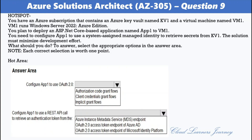Select the appropriate options in the answer area. To configure App1 to use OAuth 2.0, the options are: authorization code grant flow, client credentials grant flow, and implicit grant flow. To configure App1 to retrieve an authentication token via REST API, the options are: Azure Instance Metadata Service (IMDS) endpoint, OAuth 2.0 access token endpoint of Azure AD, and Azure AD OAuth 2.0 access token endpoint of Microsoft Identity Platform. The correct answers are: client credentials grant flow, and OAuth 2.0 access token endpoint of Azure AD.